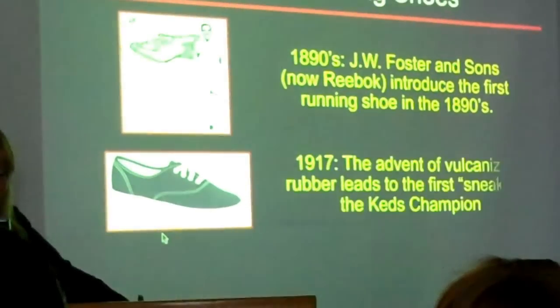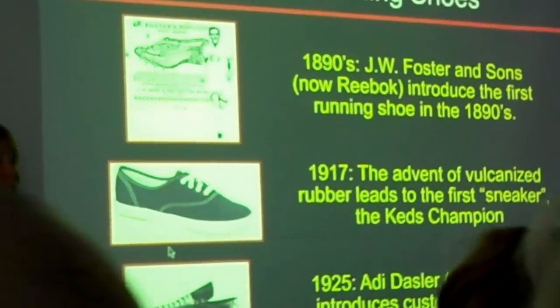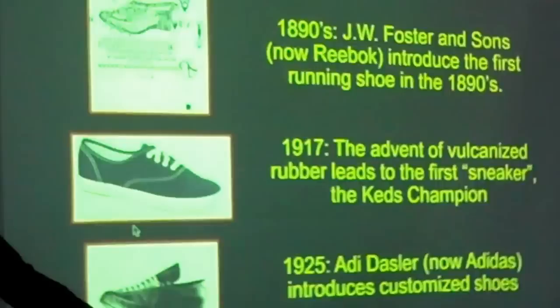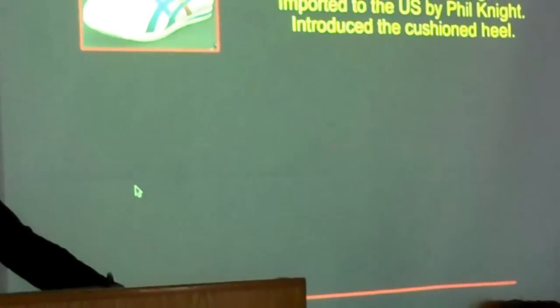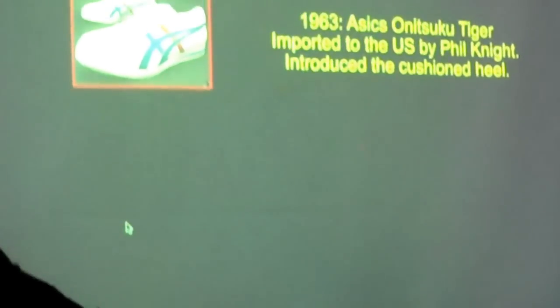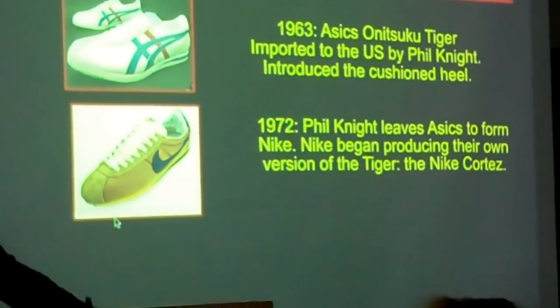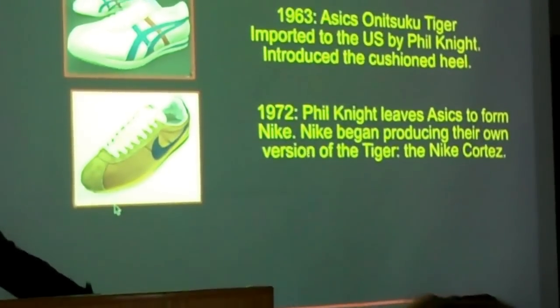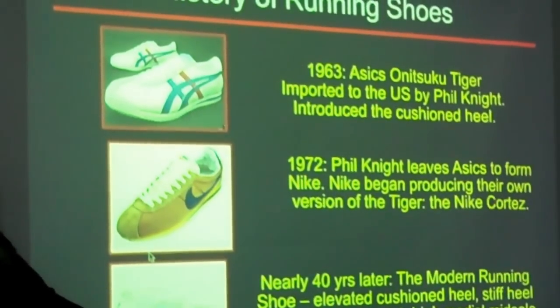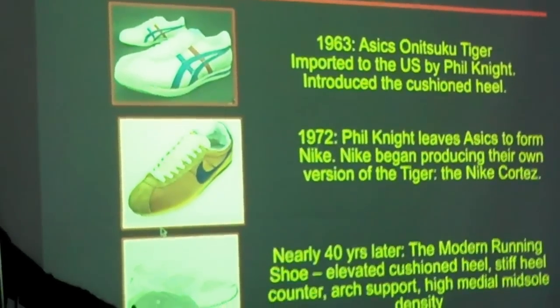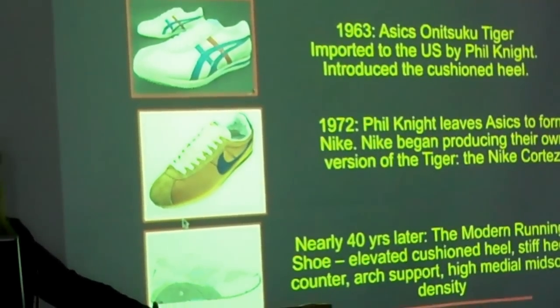If we look at the history of running shoes, 1890s, Foster and Sons, now Reebok, introduced the first running shoe. How many people had a pair of Keds when they were kids? My favorite shoes. 1916, the vulcanized rubber led to the Keds. 1925, Adi Dassler, now Adidas, introduces the customized shoes. Fast forward to 63, we have the Tiger that's imported by Phil Knight. And this is the shoe that introduced the cushioned heel. 1972, Phil Knight leaves Asics, and he forms Nike. And then Nike makes their own version of this Tiger called the Cortez. How many people remember that shoe? Now, nearly 40 years later, the modern running shoe. Elevated cushioned heel, stiff midsole, stiff heel counter, arch support, high medial midsole density.